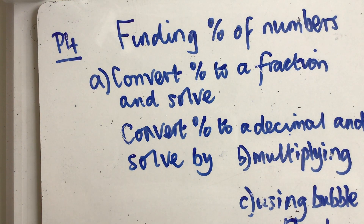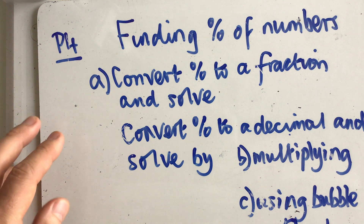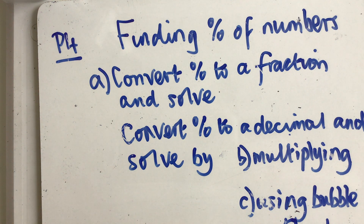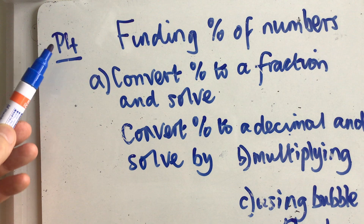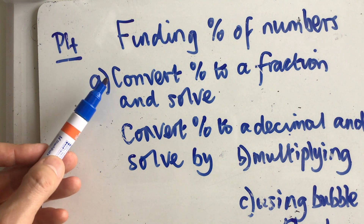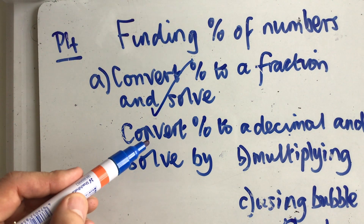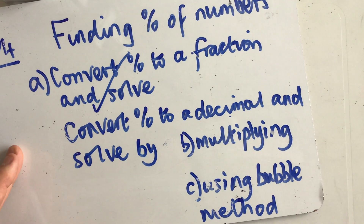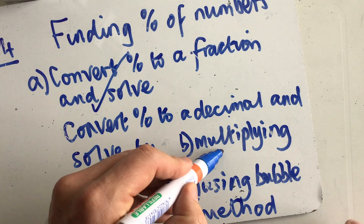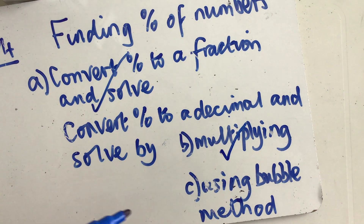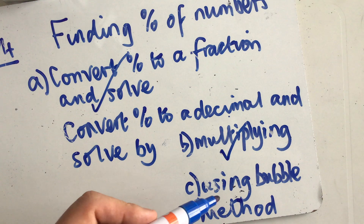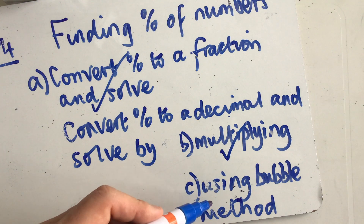Welcome back. This is the third in the series of videos to help you find a percentage of a number. The first one was 4a, converting a percentage to a fraction. The second was converting a percentage to a decimal and solving by multiplying, and this third one is solving by using a method called the bubble method.